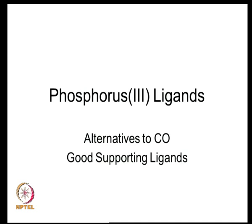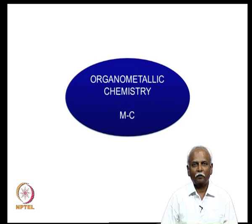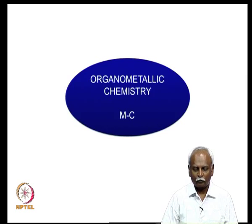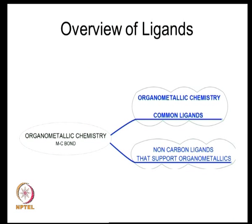In this lecture, we are going to talk about some ligands which are based on phosphorous in oxidation state 3 — phosphorous(III) ligands. In many instances, organometallic chemistry is associated with a metal-carbon bond, but you also need some other ligands to support the metal-carbon chemistry that is going on. In general, there are a variety of ligands which are useful in organometallic chemistry.